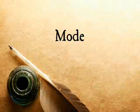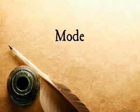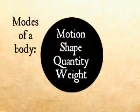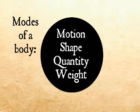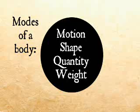A mode is that which cannot subsist by itself, but is always belonging to and existing by the help of some substance. It belongs to that substance. For example, some of the modes of a body would be motion, shape, quantity, weight. These are modes of the body. They belong to the body, and they can only exist by that body.